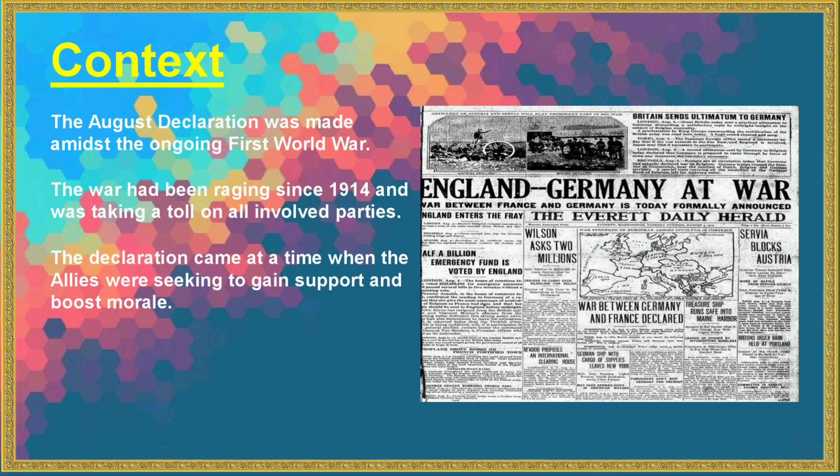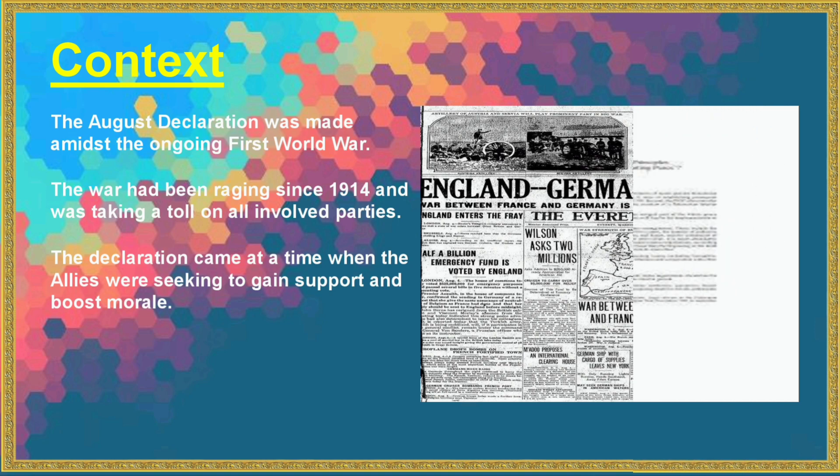The August Declaration was made amidst the ongoing First World War. The war had been raging since 1914 and was taking a toll on all involved parties. The Declaration came at a time when the Allies were seeking to gain support and boost morale.